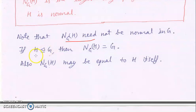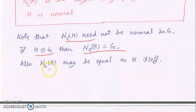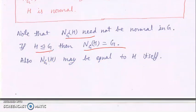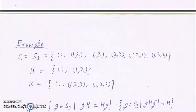Also, if H is normal in G, then all elements of G satisfy gH = Hg, so the normalizer of H equals G itself. On the other hand, the normalizer of H may also equal H itself — we will give an example of both cases.